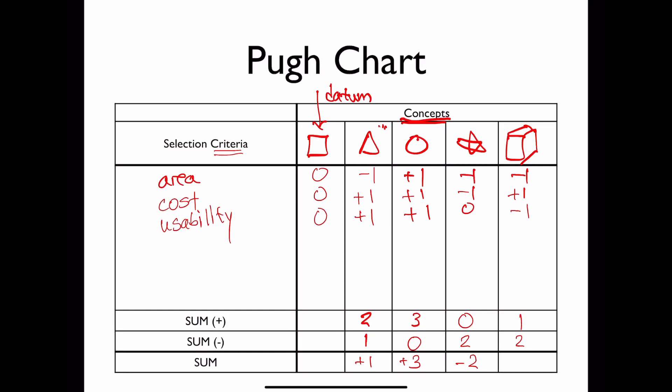Now, all of these comparisons are relative to the datum, so this does not mean that the circle concept is three times as better as the triangle concept, or sort of like six times as better than the star concept, but mainly it's to help you understand what is the relative improvement between these concepts. So in your design, you might want to look at what's so really good about this one with a positive three, and keep aspects of those designs.